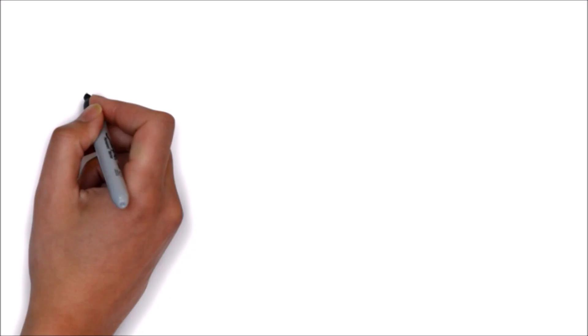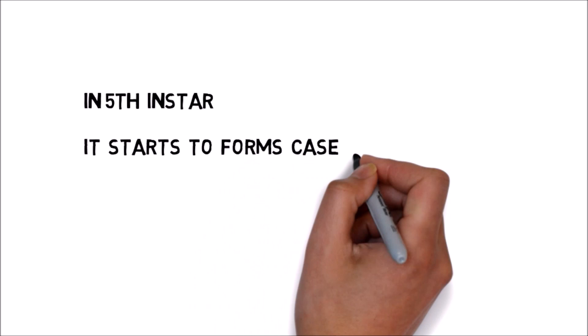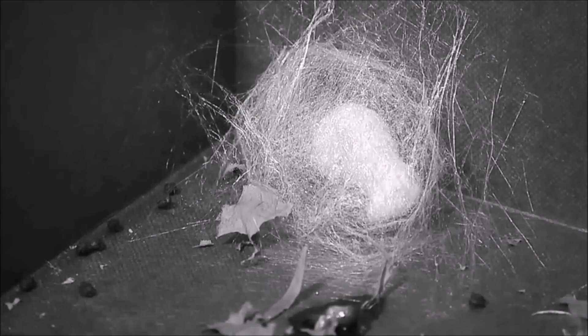In fifth instar, silkworm starts forming a case around its body. The outer case is also known as cocoon. It is the raw material to obtain silk.